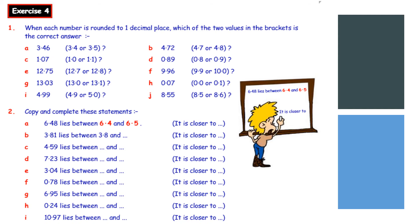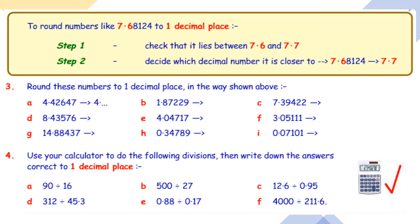Our final slide, these steps that we've looked at before, to round numbers like 7.68124 to one decimal place. Step one, check that it lies between 7.6 and 7.7. Decide whether to go up or down. We're looking at the eight there, which tells us to round up. Sorry, I said six point six, it's seven point six and seven point seven. The eight is the important number there, that's the only number that matters. So the eight tells us that we're rounding up to 7.7.